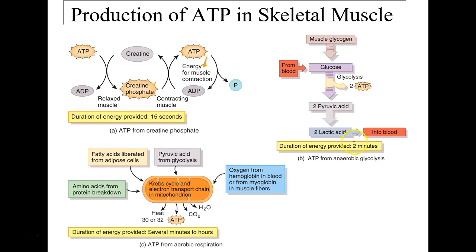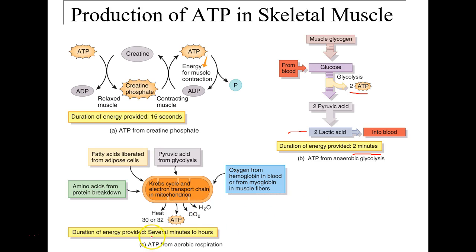Anaerobic glycolysis — if anybody has ever had muscle cramping, this is where lactic acid builds up in the blood and muscle and can cause a rather unpleasant burning. Through this type of production we actually create two ATP, which is relatively quick production.